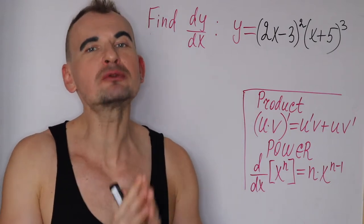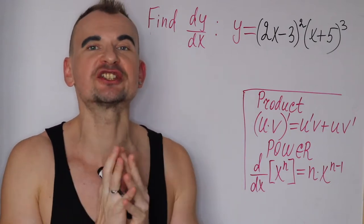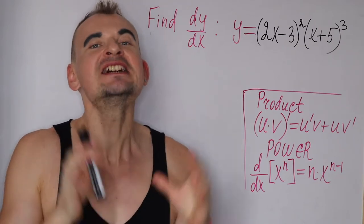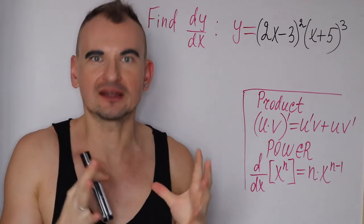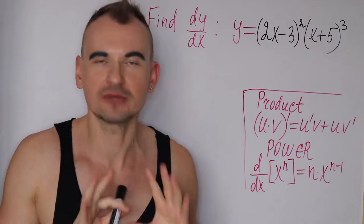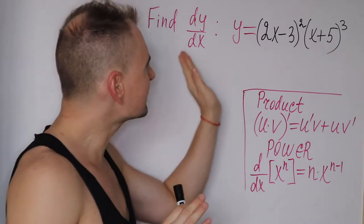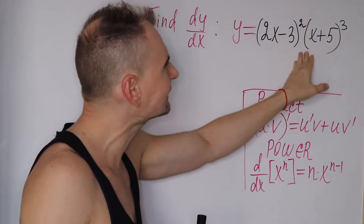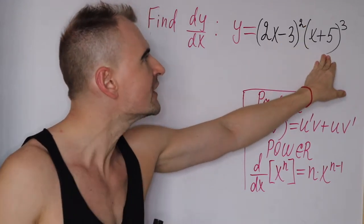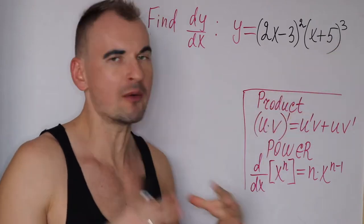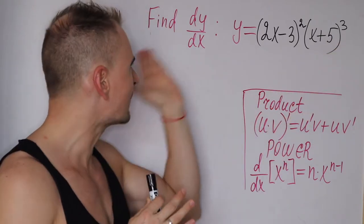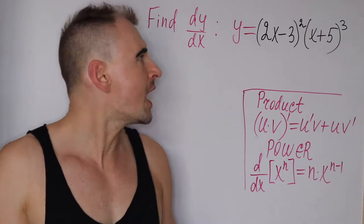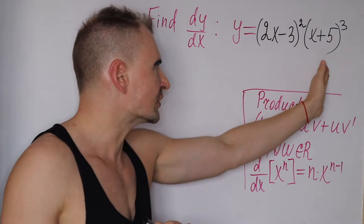Hey guys, in today's video I will show you how to take the derivative of functions using the power rule, the product rule, and the chain rule together. Say you have been given this function: (2x minus 3) squared times (x plus 5) cubed, and you need to find dy/dx or y prime — the derivative of this function.